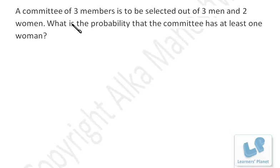What is the probability that the committee has at least one woman? Now we have two methods to solve this problem. See, total there are three men and two women, and we have to select at least one woman. We have to select total three members, out of them at least one should be a woman.